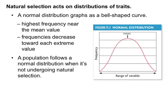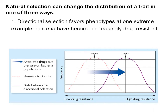A population follows a normal distribution when it's not undergoing natural selection. Natural selection can change the distribution of a trait in one of three ways. The first type is directional selection, which favors phenotypes at one extreme. A great example is that bacteria have become increasingly drug-resistant. Starting with a normal bell-shaped curve, bacteria with low drug resistance are killed easily, those in the middle take a medium dose, and those with high drug resistance are really hard to kill. The ones that survive and reproduce are those with high drug resistance, shifting the whole population toward that extreme — that is directional selection.